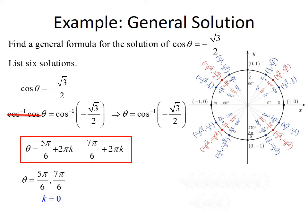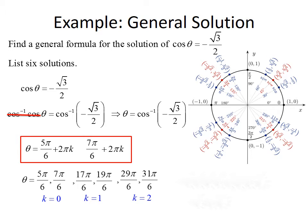So we can use the general formula to generate solutions. If k equals 0, we get 5π/6 and 7π/6. If k equals 1, we get 5π/6 + 2π = 17π/6, and similarly 19π/6 from 7π/6. And if k equals 2, we simplify to get 29π/6 and 31π/6. So this represents 6 solutions of the equation cosine of theta equals negative root 3 over 2, generated using the general solution.